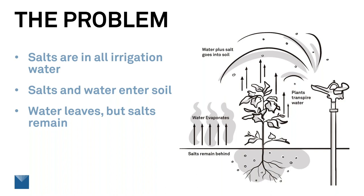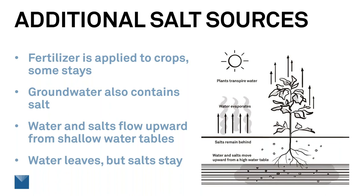The problem is that salts are in the irrigation water. When we irrigate, those salts enter the soil with the water. The water leaves the soil mostly by evapotranspiration — the water can evaporate, but the salts can't, and so they stay in the soil. There are other important sources of salts: we apply chemical fertilizers to crops, the crops take up some but some usually remains. Groundwater also contains salt; if the water table is sufficiently close to the surface, evaporation will bring the salts to the surface.